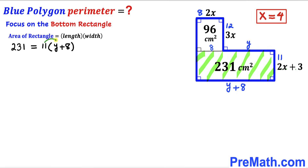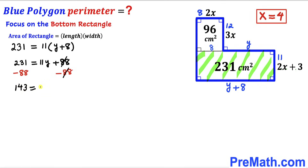Distributing 11, we get 231 equals 11y plus 88. Subtracting 88 from both sides gives us 143 equals 11y. Dividing both sides by 11 to isolate y, we find y equals 13 centimeters.